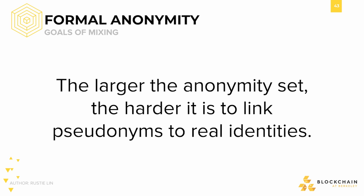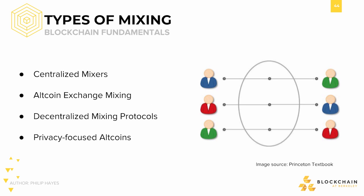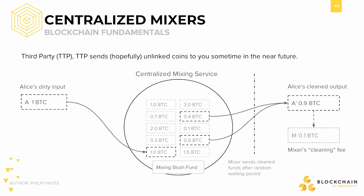To make clear, there's a fundamental idea behind mixing: the larger the anonymity set, the harder it is to link pseudonyms to real identities. There are several types of mixers. These include centralized mixers, altcoin exchanges, decentralized mixing protocols, and privacy-focused altcoins. The most simple kind of mixer — the easiest to design — is a centralized one. Particularly, a protocol known as third-party protocol, or TPP. By understanding a centralized solution first, we can then explore how other protocols may build off of this main design.